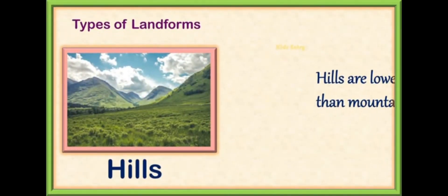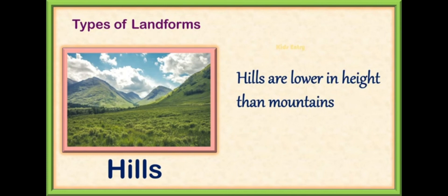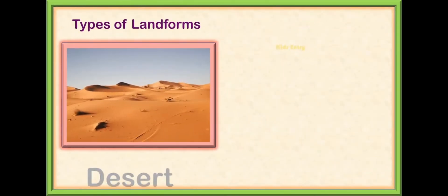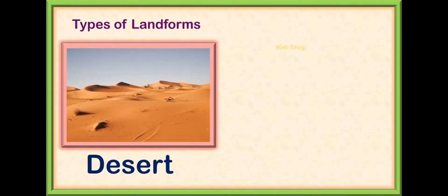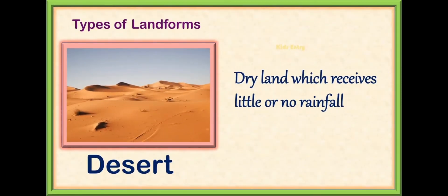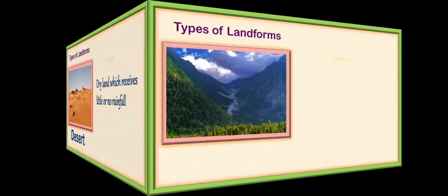The second landform is hill. An area of land that is higher than the area around it is called a hill. Next is desert. Deserts are large areas of land that are very dry and sandy — dry land which receives little or no rainfall.